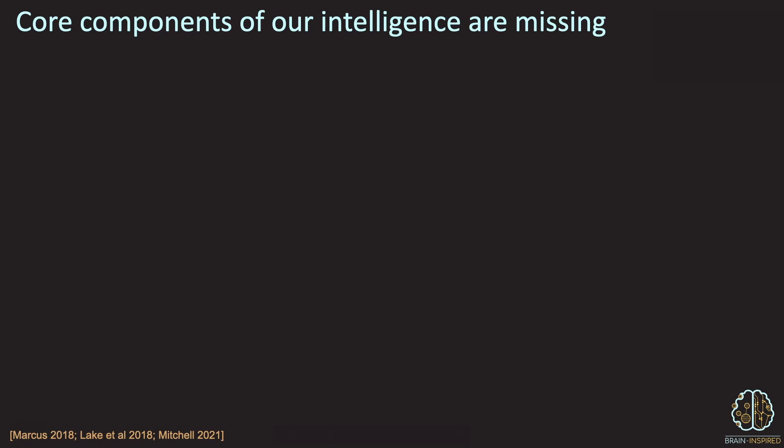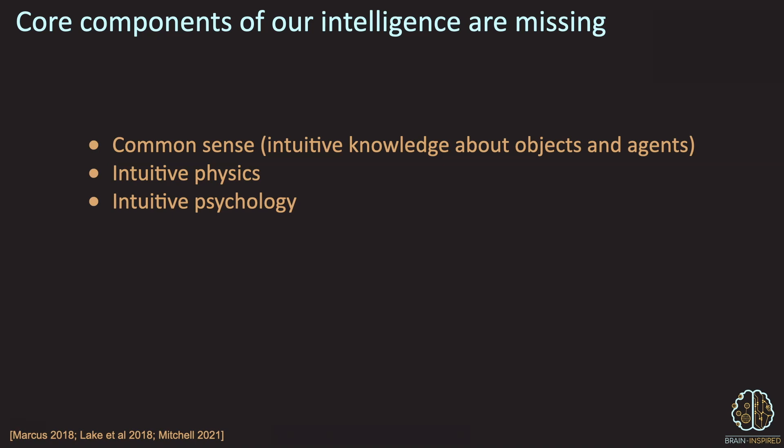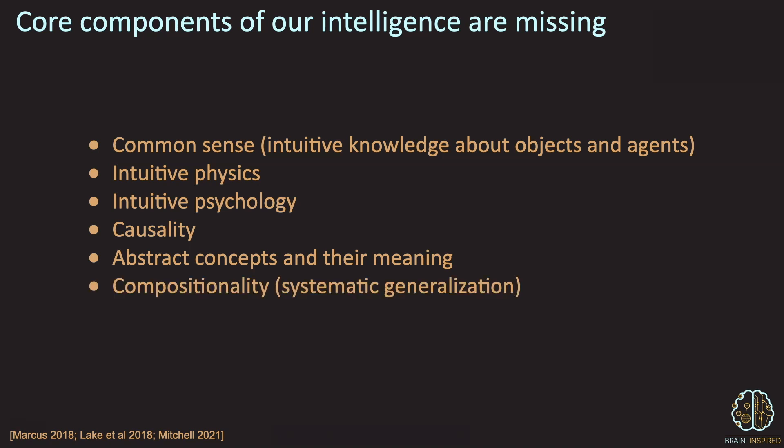But even if we solve those challenges, there are bigger challenges for what we would consider general intelligence to possess. Things that humans have that machines don't. Things like common sense. Intuitive physics. Understanding how gravity works, for example. Intuitive psychology. I can infer what other people are thinking, and I can usually predict what they'll do. A sense of the causal structure of the world. We understand abstract concepts and their meanings, and we can make analogies between concepts. And compositionality. We understand that things like bicycles are made of parts, and we can use those parts to build novel things that aren't bicycles. So that's question one. How do we make AI more general? And you can see there's a long way to go.